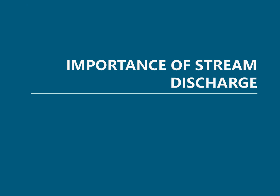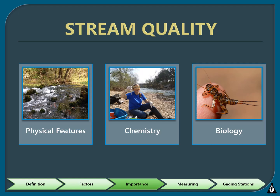Let's talk about why we are interested in measuring stream discharge and why it is important to the stream ecosystem. Stream discharge is an important part of a stream system to understand because it has a large effect on the physical, chemical, and biological characteristics of a stream. We will briefly go over how discharge affects each of these components of a stream's water quality.